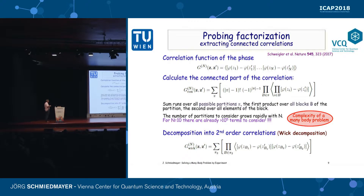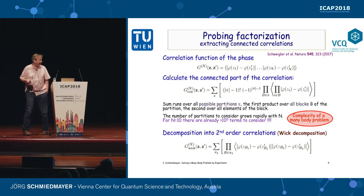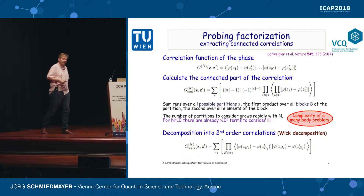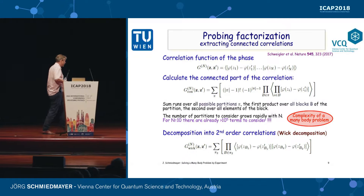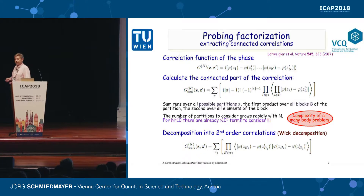To probe that, you have to go to statistics books. Basically it means you have to find all permutations of the lower-order correlation functions and subtract them. This can become very cumbersome — for n equals 10 in our system, including all the symmetries, you have about 10^5 terms to calculate to extract the connected part of the 10th-order correlation function. This is basically the same complexity as doing full tomography for 10 qubits.